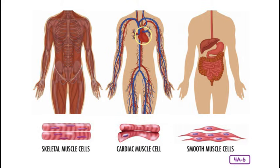Smooth muscle is the third type of muscle in your body. It is also an involuntary muscle because you cannot consciously move it. It contracts exactly like skeletal muscles do, only much more slowly. Smooth muscle lines the walls of internal organs and blood vessels and uses less energy than skeletal muscles. It squeezes and tightens, mixing and churning food in the stomach, and it lines your lungs and blood vessels too.